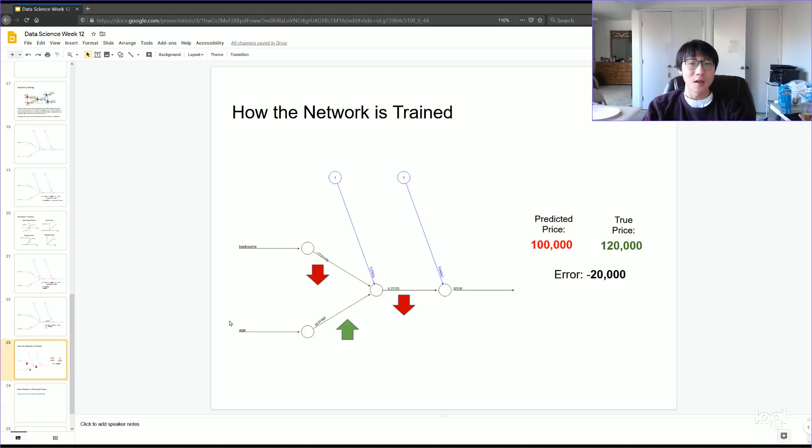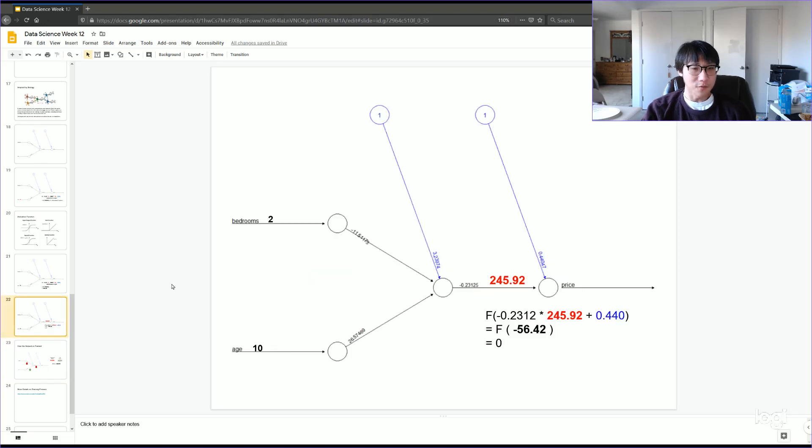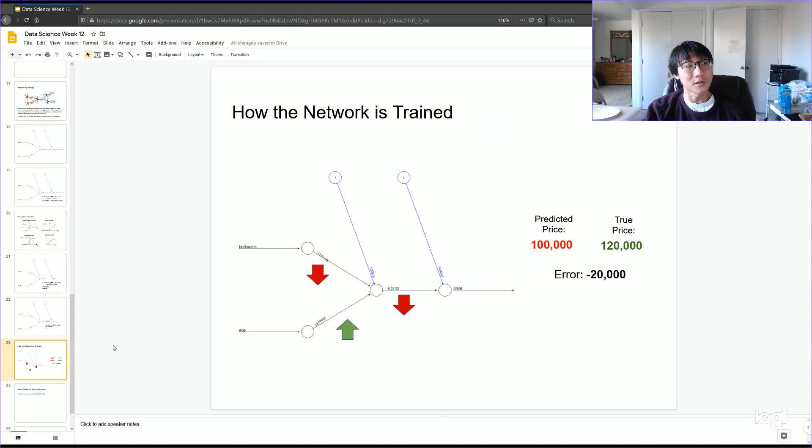And so the gist of it is simply as follows. Let's say that at the end of this whole process that I described before where these neurons are passing values to each other and then multiplying by the weights and then putting them through the activation functions. Let's suppose that at the end of this whole process, we get a prediction for the value of the home. And let's say just hypothetically that that predicted value is $100,000.